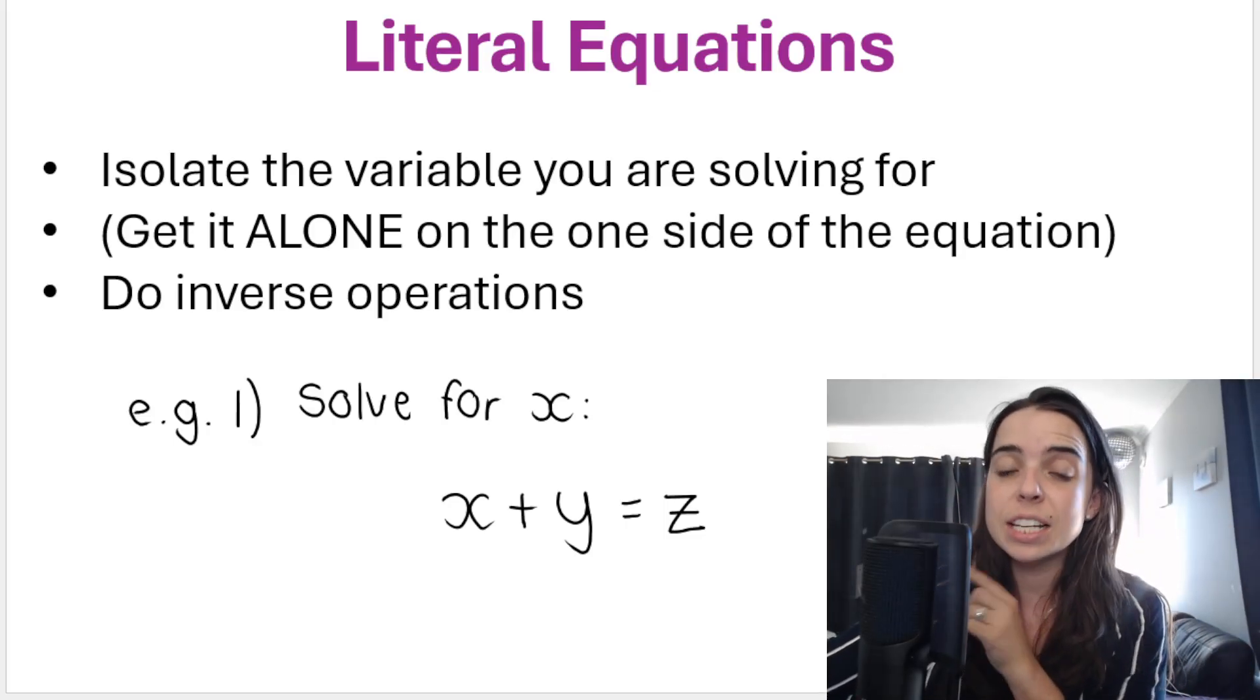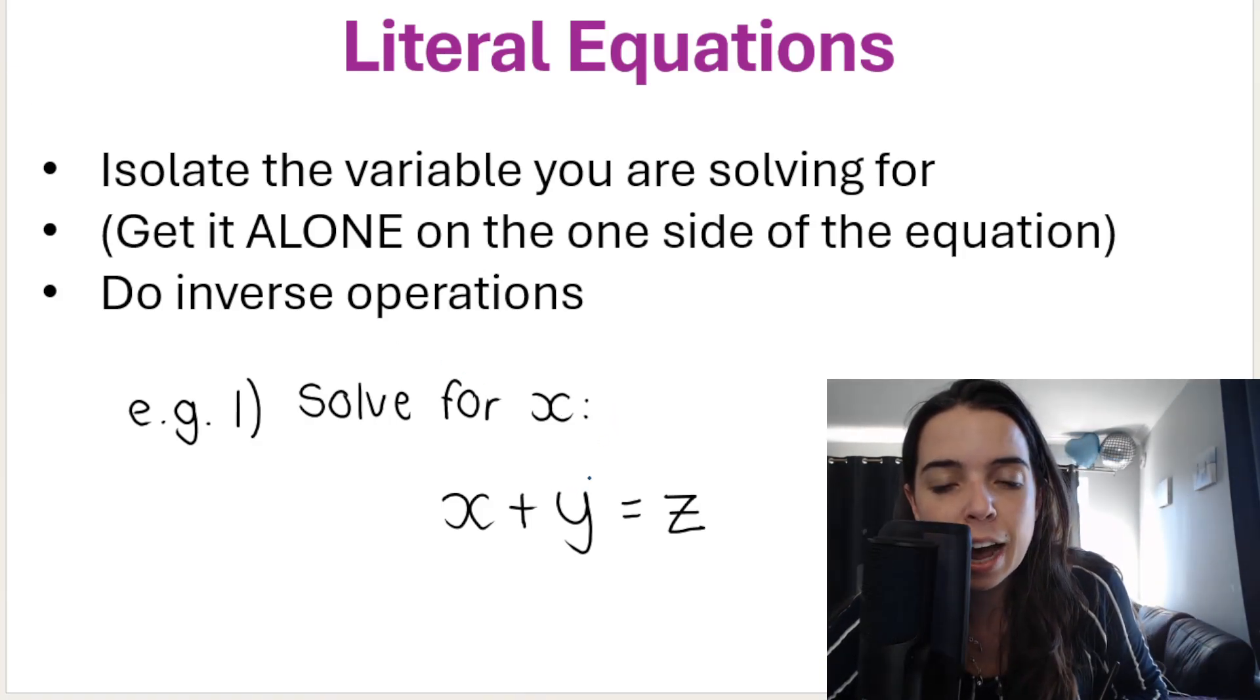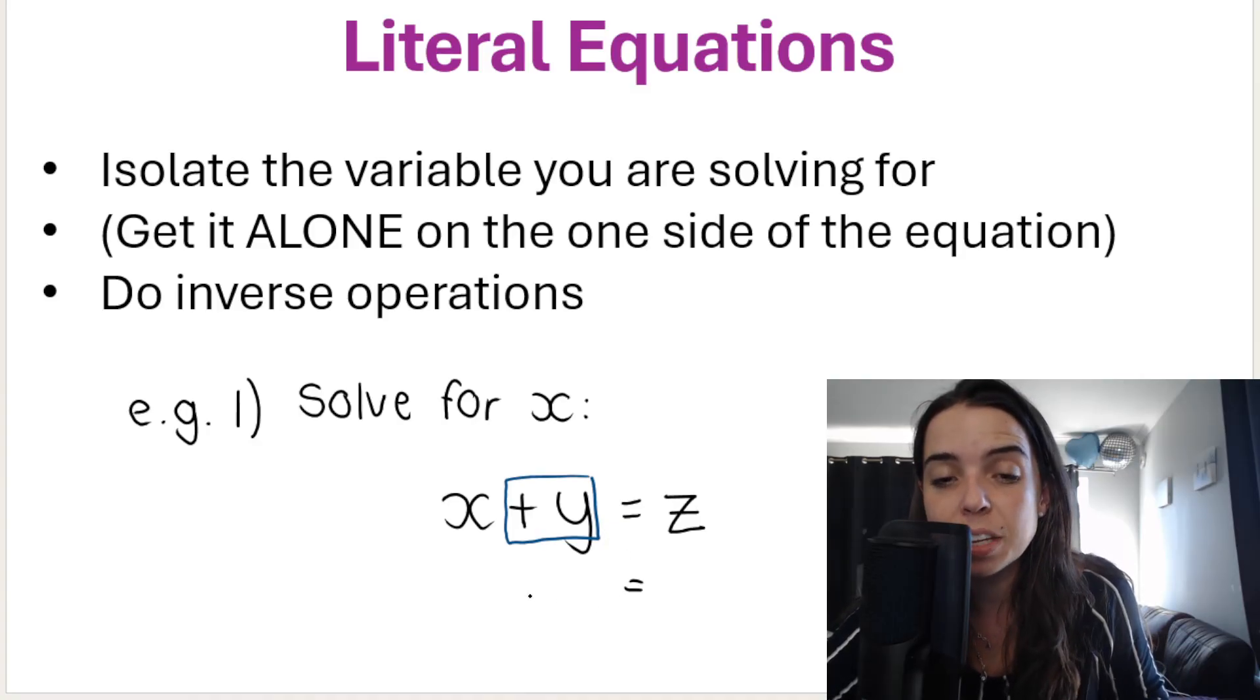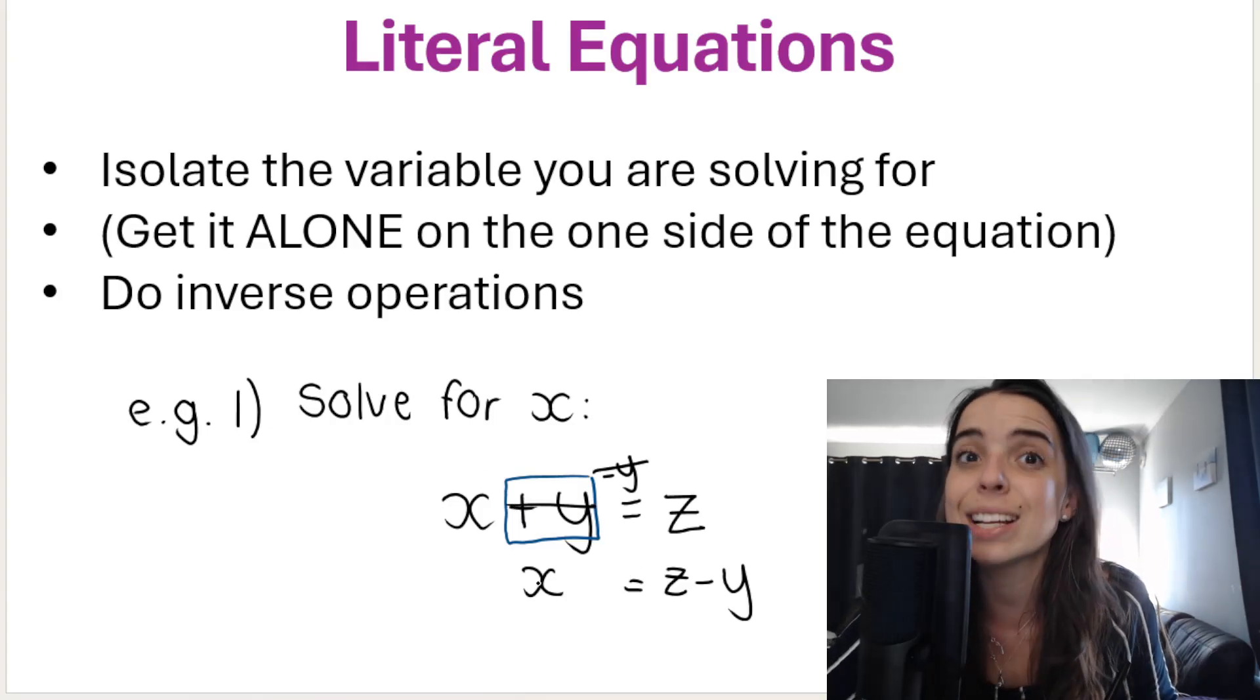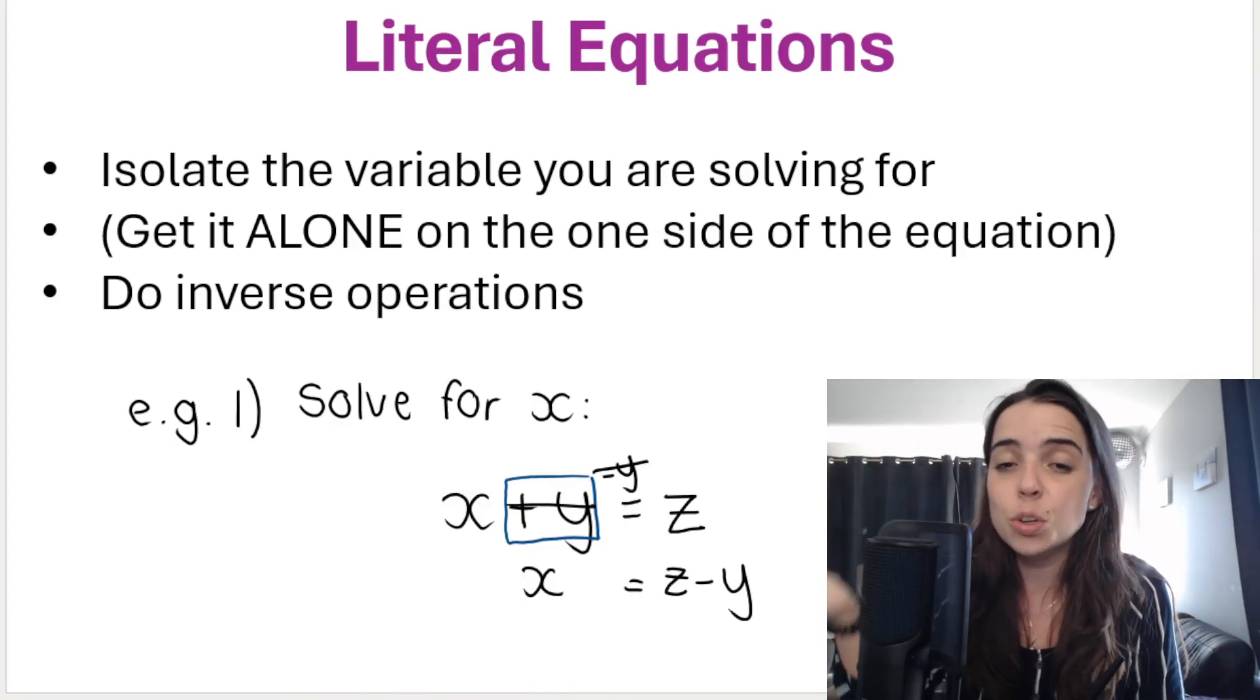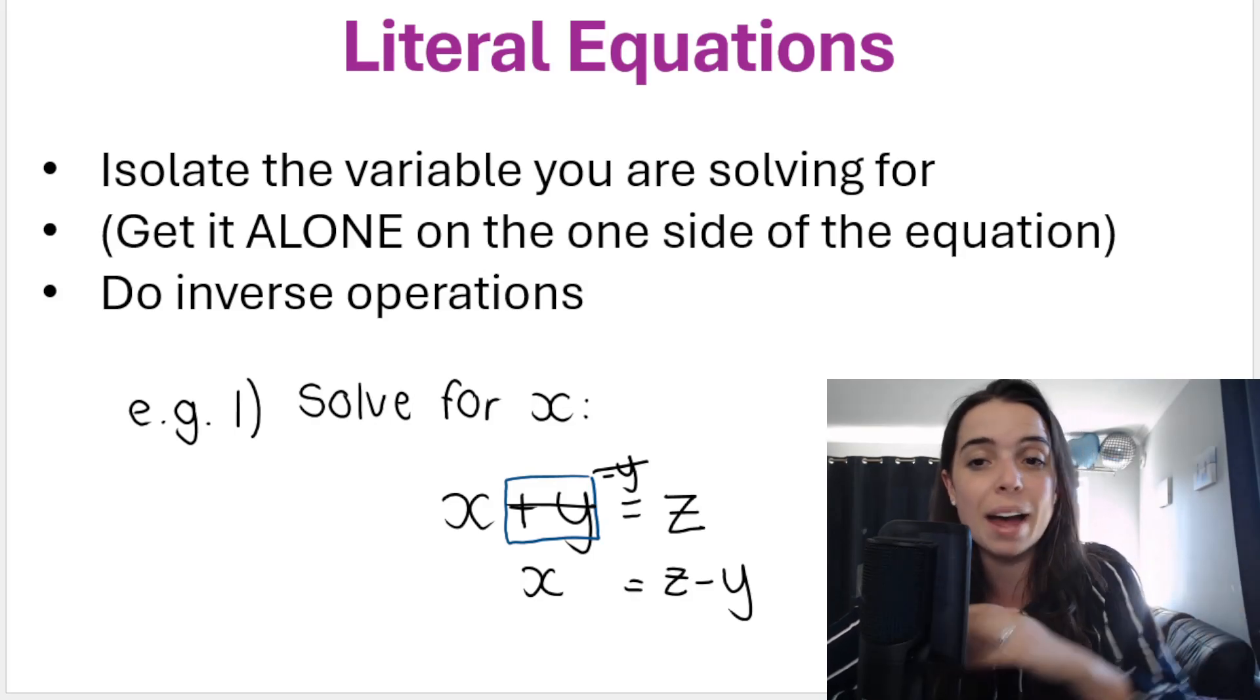So for example, in this literal equation I'm asking you to solve for x. So you need to get x by itself. At the moment it is being added with y, so plus y. What is the inverse operation of plus y? Minus y - we're going to subtract y on both sides of the equation. Now if you subtract by y on the left hand side of the equation, the plus y and the minus y cancel out, leaving us with x, and then you got z minus y. And that's it, you've completed your solving, your literal equation. X is the subject of the formula, so you see x is standing alone and x is equal to z minus y.